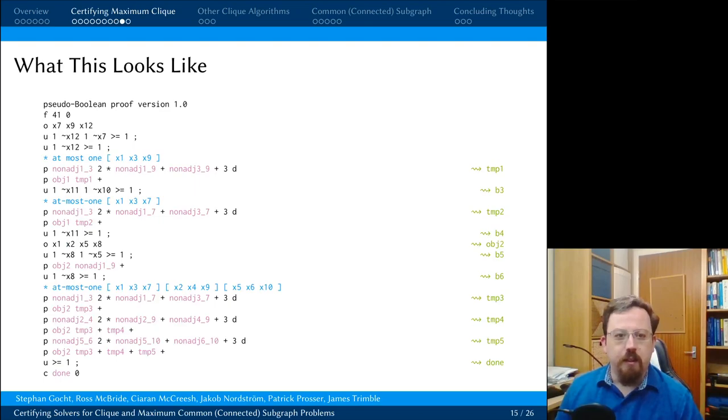So what does this look like? I'll not go into detail, but the manually derived constraints are the lines that start with P that I've added in. We can see the first P line here says take the non-adjacent constraint and multiply it by 2. This is reverse Polish notation. Add the non-adjacent constraint, add the non-adjacent constraint, and divide the whole thing by 3 to create a new constraint. And this now is a complete proof that will be accepted by VeriPB.